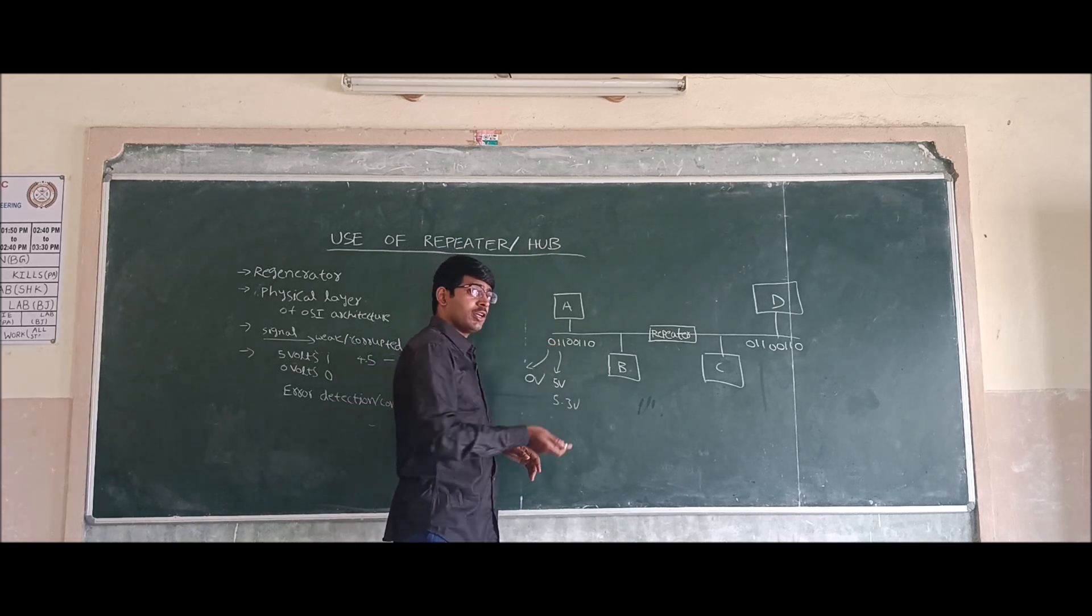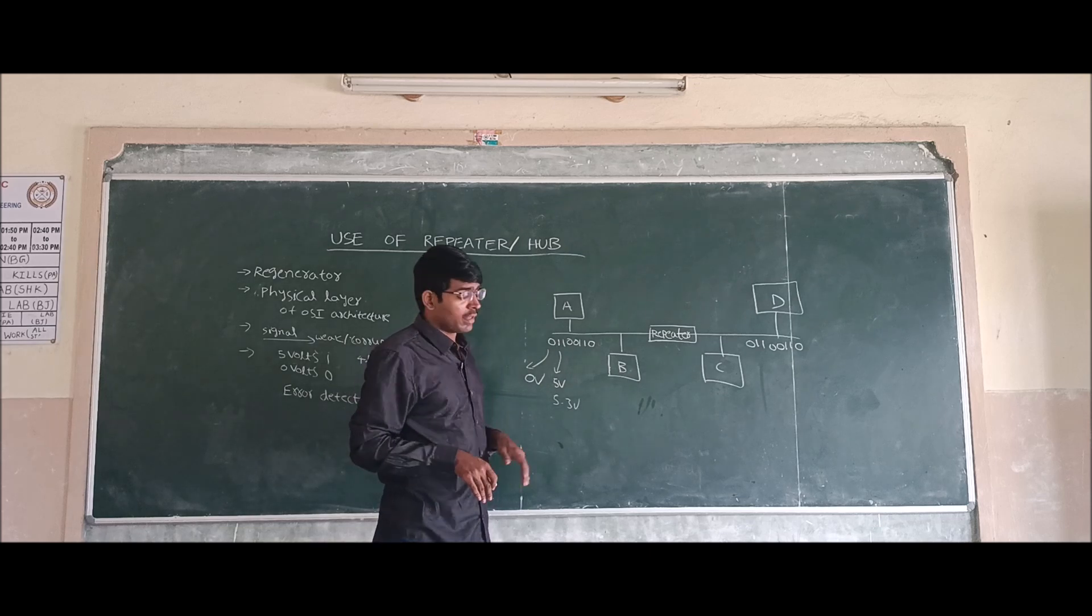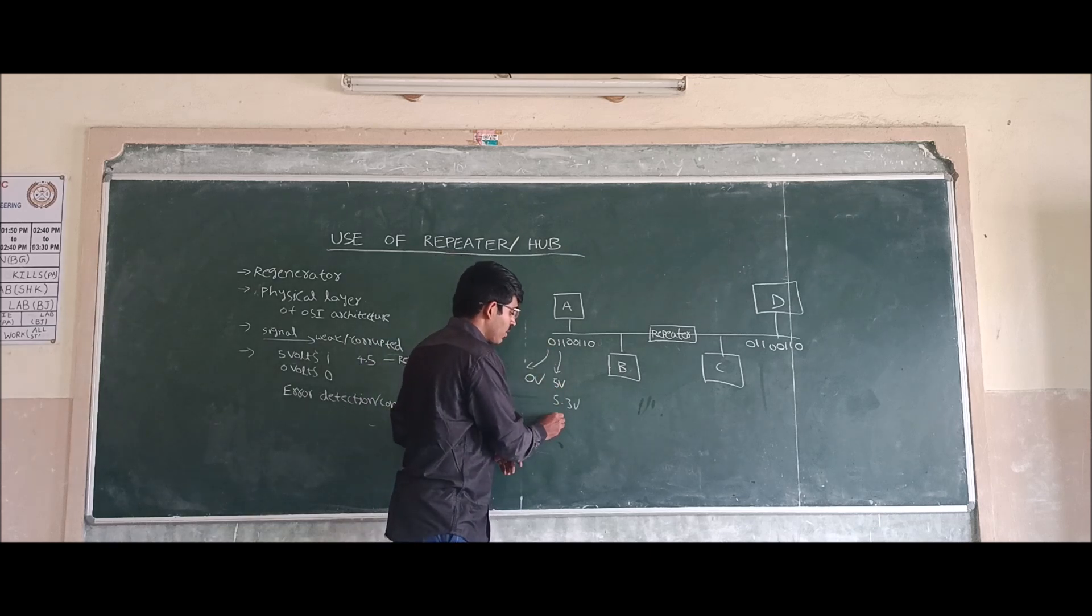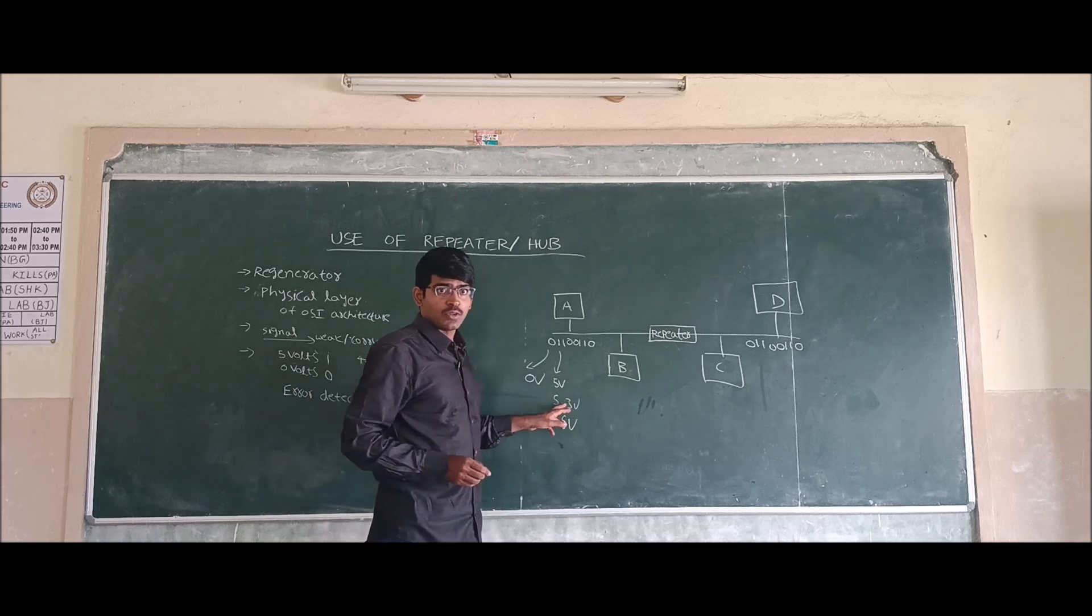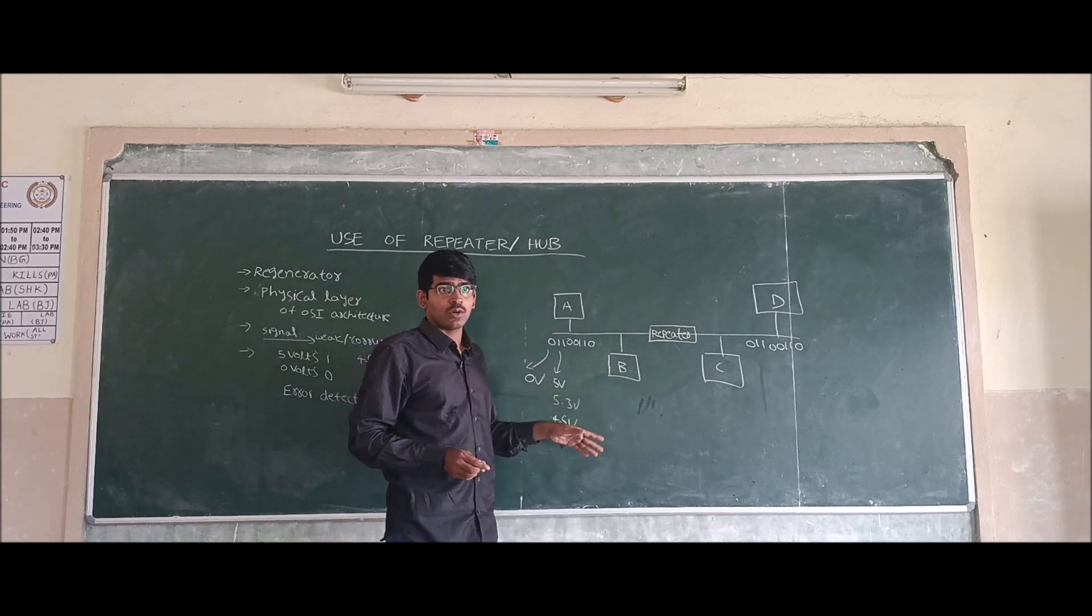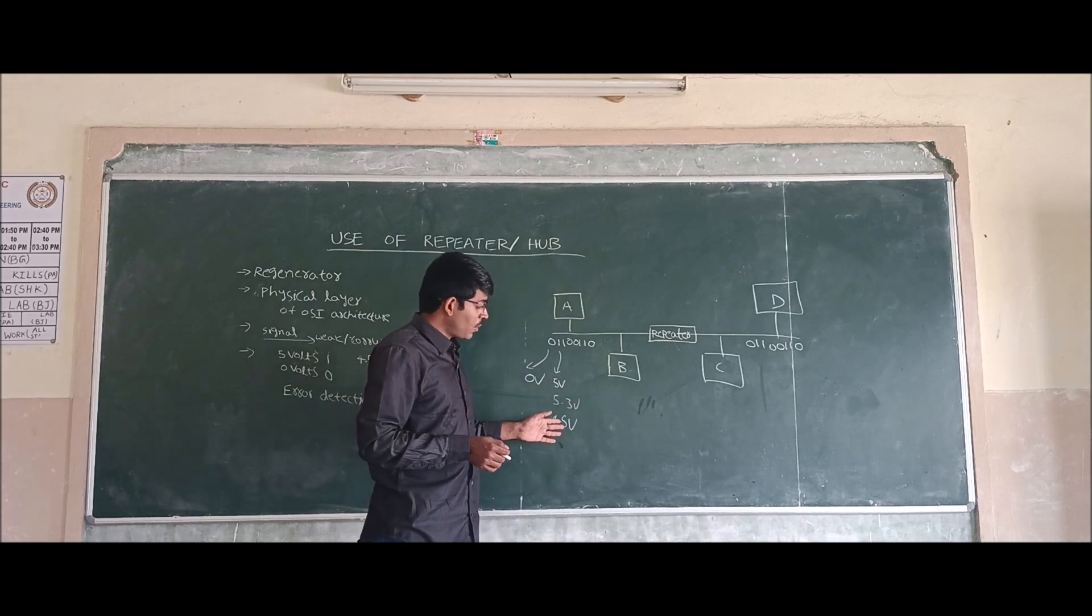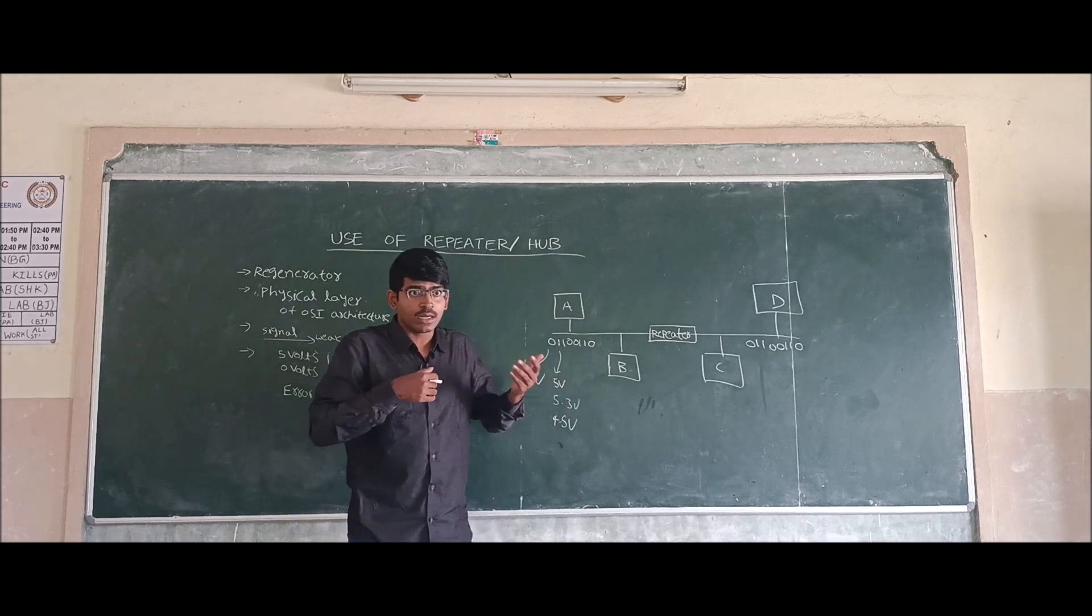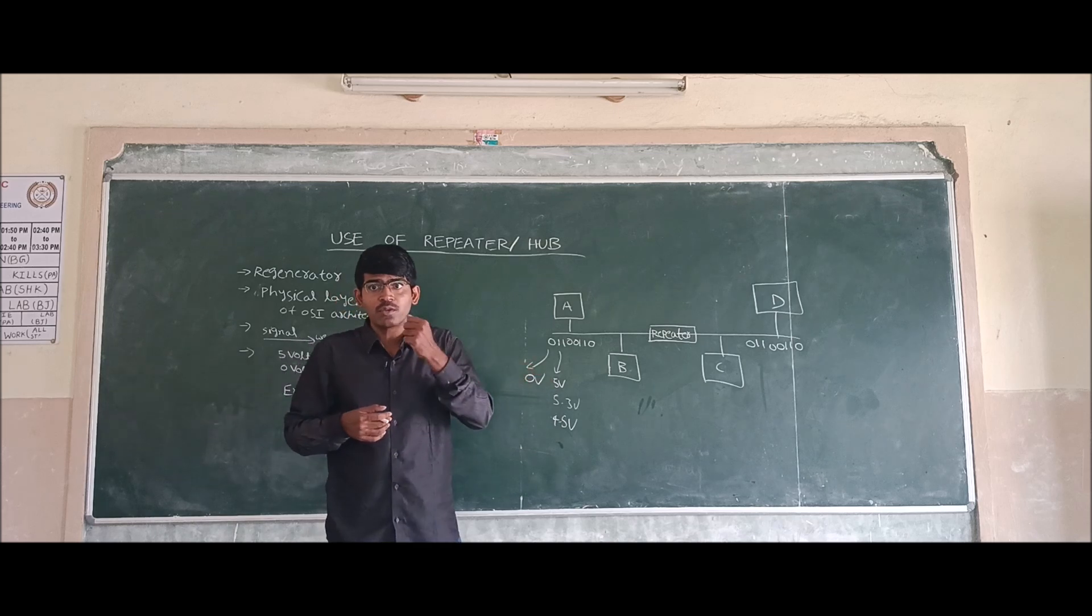Sometimes attenuation may happen. When attenuation happens, the 5 volt signal may change to 4.5 volts. In the 5.3 volts case, the extra 0.3 volts is noise. The 0.5 volts is getting attenuated when we get the 4.5 volt signal.